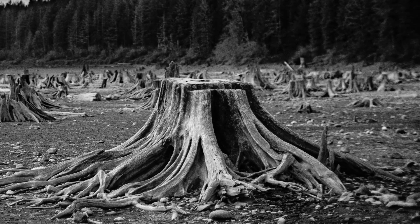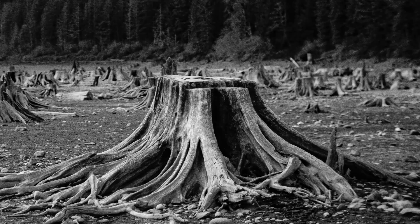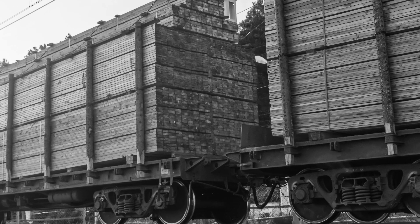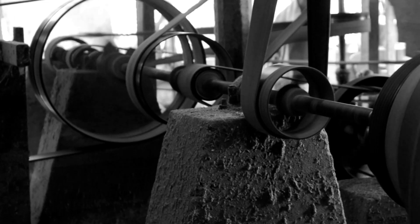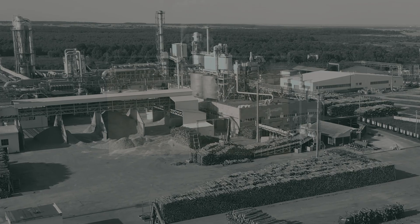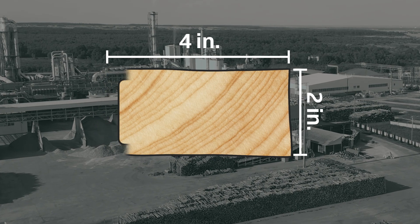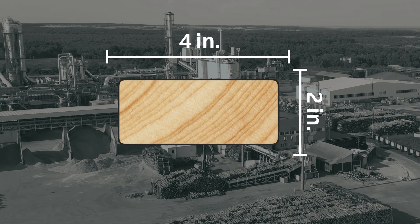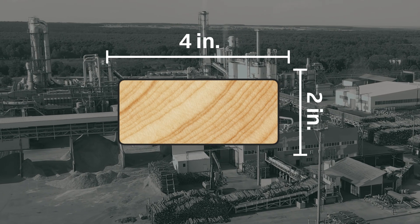Over time, the forests near large cities were depleted, and trees had to be cut farther and farther away. This meant the lumber had to be shipped by rail, which drove up the price because it was expensive. Around the same time, the steam engine was allowing for major advances in milling. This gave manufacturers an idea: they decided they would surface the lumber before it shipped, instead of leaving that to the customer. This meant that each board weighed less, and they could ship more boards for the same cost.